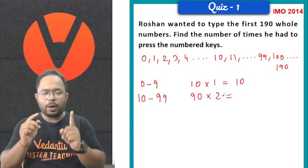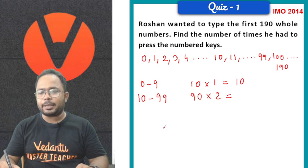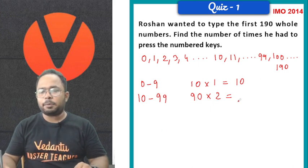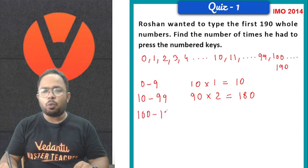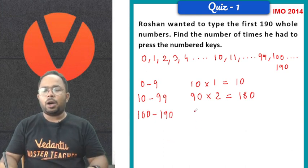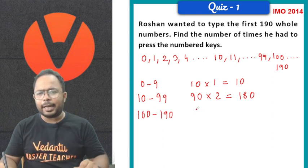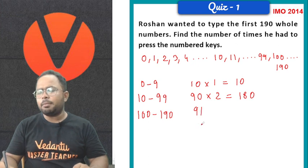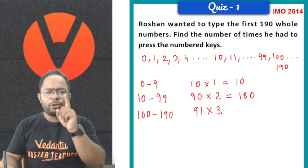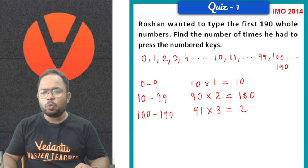Similarly, from 100 to 190. How many numbers we will be getting from 101 to 190? 91 numbers we will be getting. And this time, we will be pressing 3 numbered keys for each 3 digit number. So, ultimately, 91 into 3 is 273.